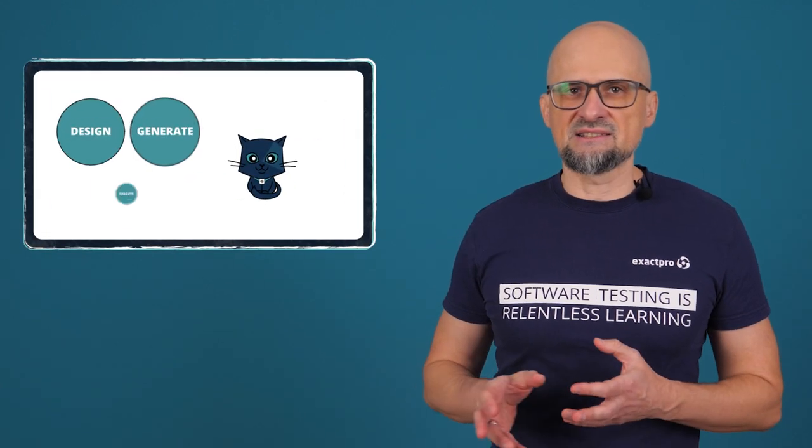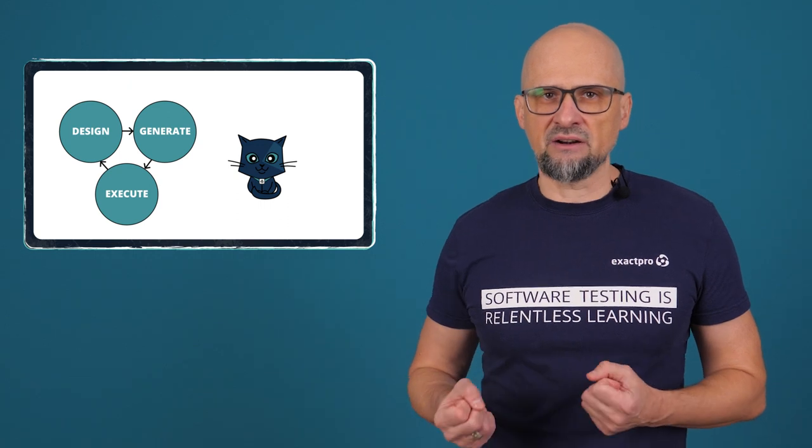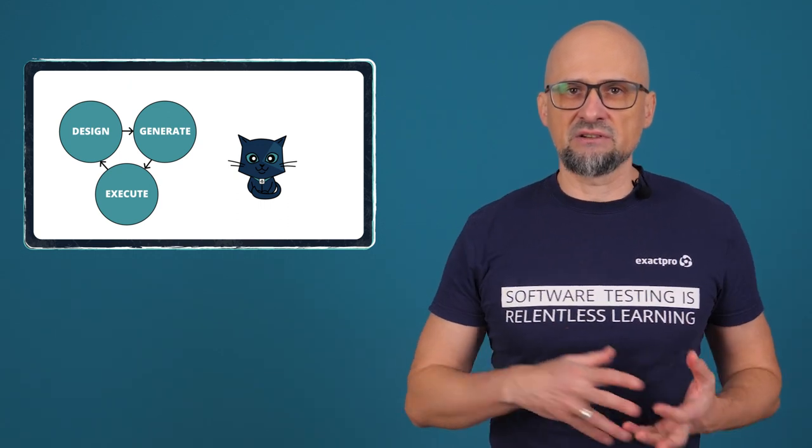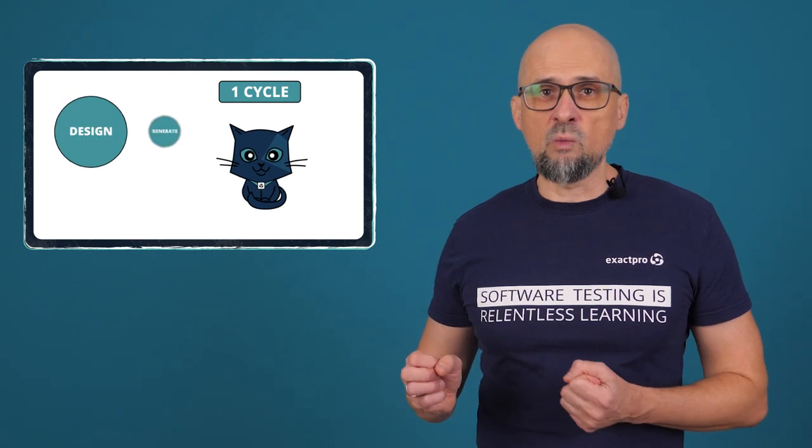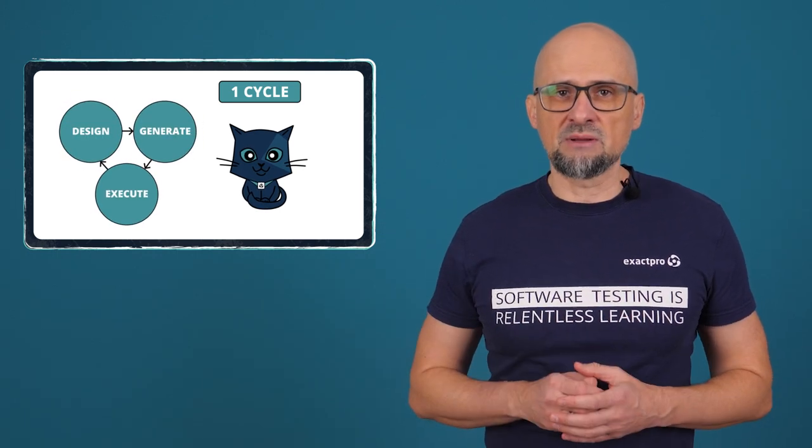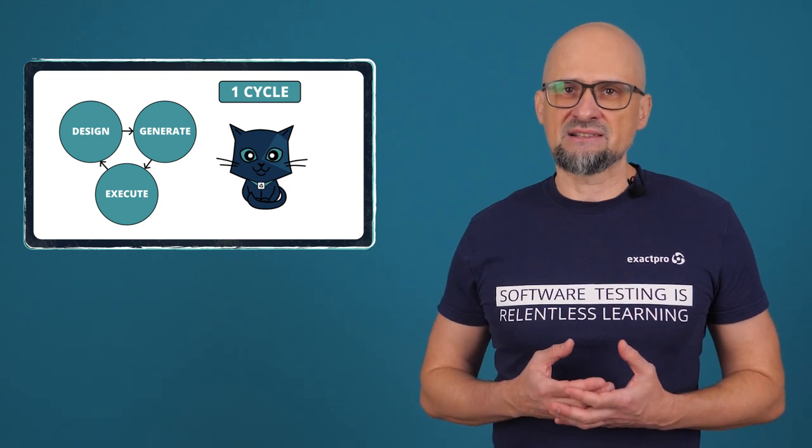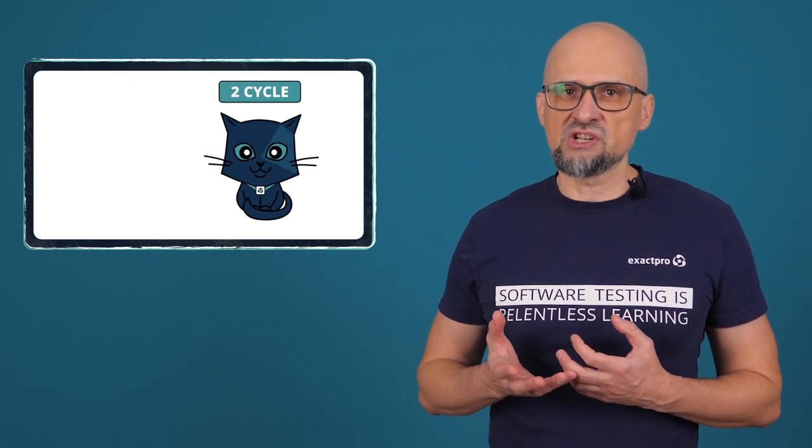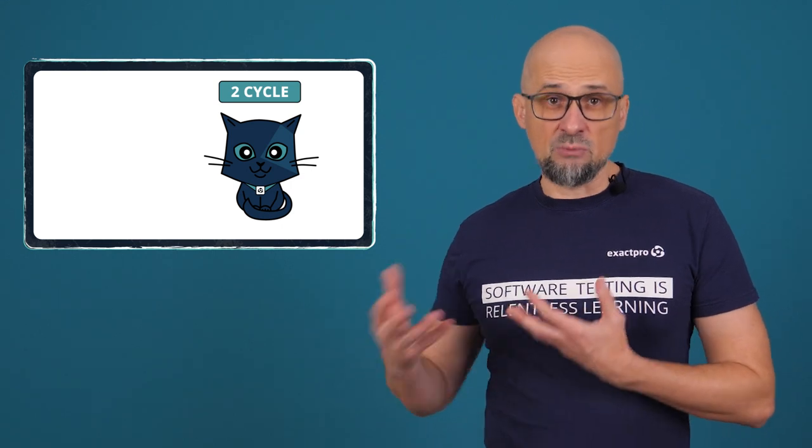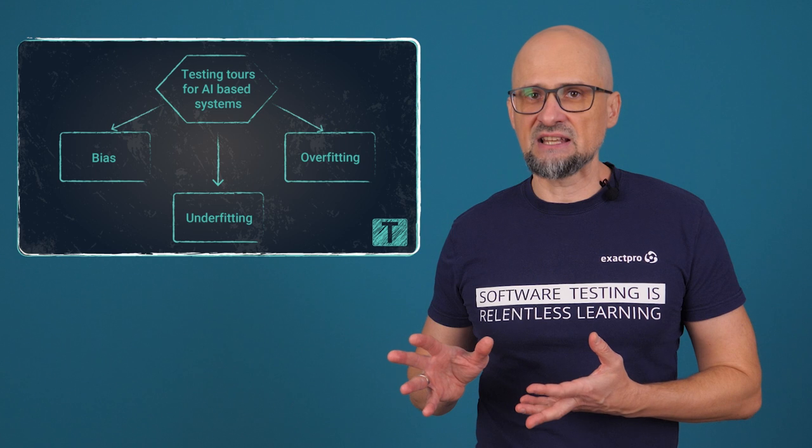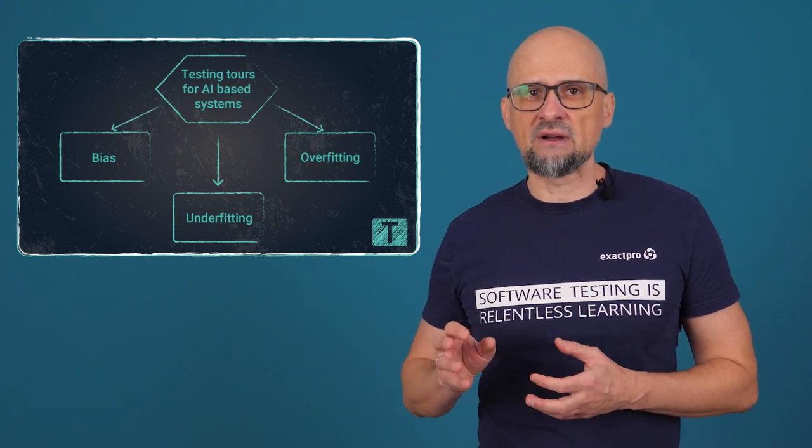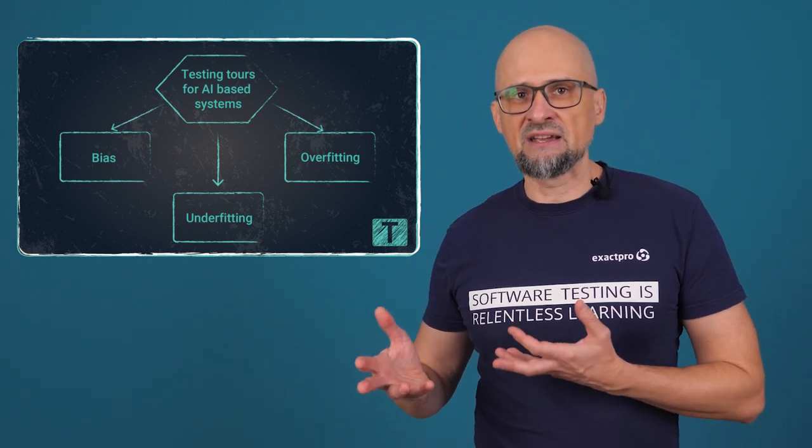In exploratory testing, tests are designed, generated, and executed in an iterative manner, with the later tests based on the results of earlier tests. This is especially useful when there are poor specifications or test oracle problems, which is often the case for AI-based systems. This type of testing is a good addition to more systematic testing, such as metamorphic testing. A tour is a metaphor used for a set of strategies and goals for testers to refer to when they perform exploratory testing organized around a special focus. Typical tours for the exploratory testing of AI-based systems might focus on the concept of bias, underfeeding, and overfeeding.